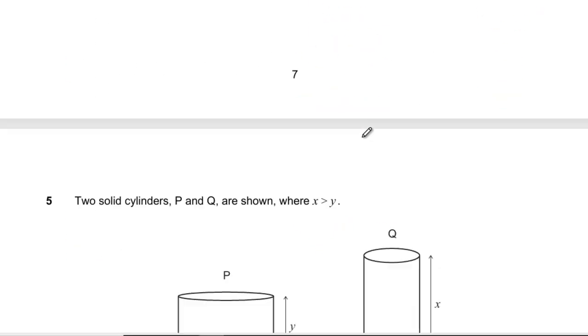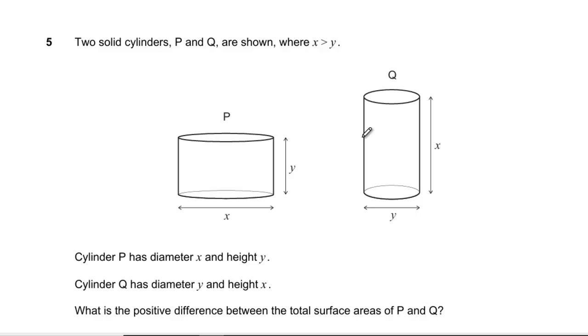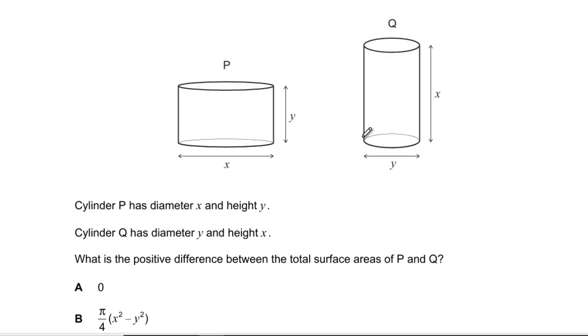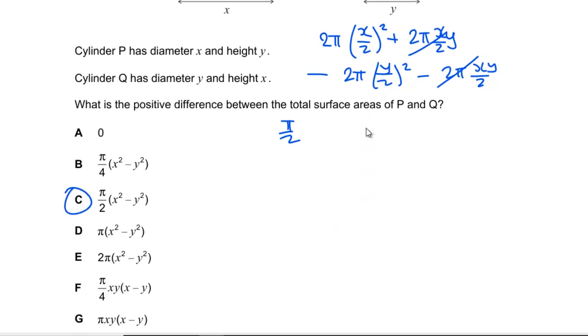Question 5: We've got two cylinders P and Q, x is greater than y, and they're solid cylinders. What is the positive difference between the total surface areas? Surface area of P is 2π(x/2)² plus 2π(x/2)y, and then I take off the other one which is going to be the same with x's and y's flipped. The 2πxy/2 terms cancel, so I've got π/2(x² - y²), which comes out as C.